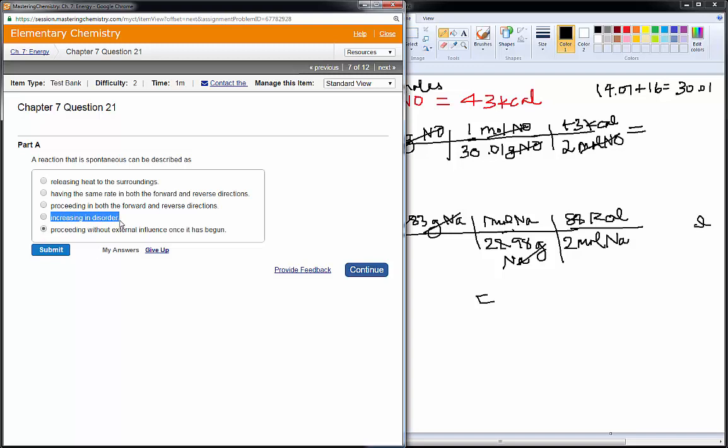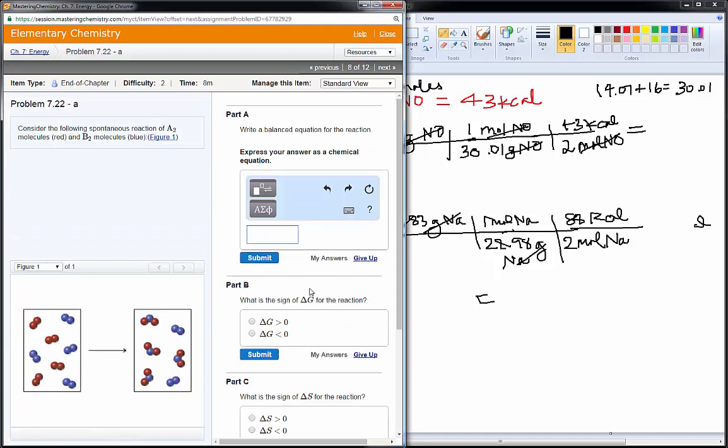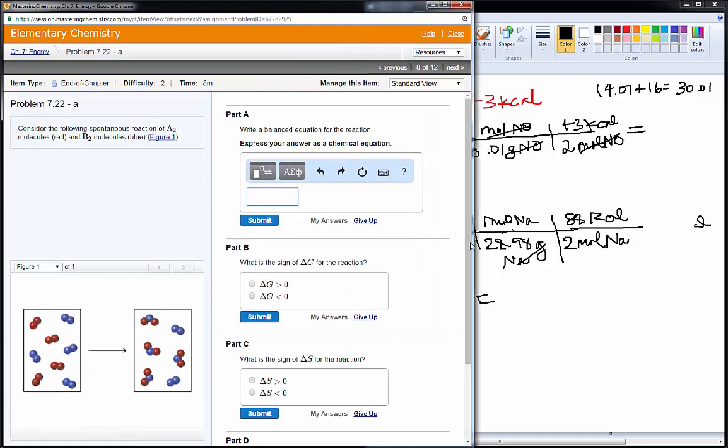This is talking about having a positive delta S. This is talking about being in equilibrium, which we'll talk about later in this chapter. This is talking about delta H. So, we're looking at proceeding once it has begun.